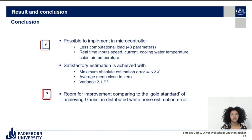We can conclude that it is feasible to implement this model in a microcontroller due to the low computational load, requiring only 43 parameters. The real-time inputs needed are speed and current — already required for machine control — plus cooling water temperature and cabin air temperature. A satisfactory estimation is achieved with a maximum absolute estimation error of 6.2 Kelvin, an average mean close to zero, and an average variance of 2.1 Kelvin squared. There is still room for improvement compared to the Gaussian white-noise benchmark, particularly with special focus on the PM model.